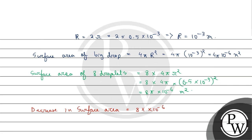Evaluating that, the surface area of the 8 droplets is also equal to 4π × 10⁻⁶ meter squared. So the decrease in surface area is the difference between these two values.